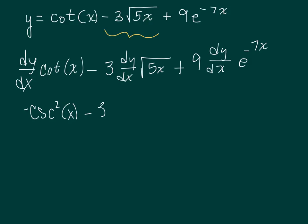And then we said the derivative of the square root of anything is 1 over 2 square root of the anything times the derivative of the anything. Well the derivative of the anything is the derivative of 5x, which would be 5.